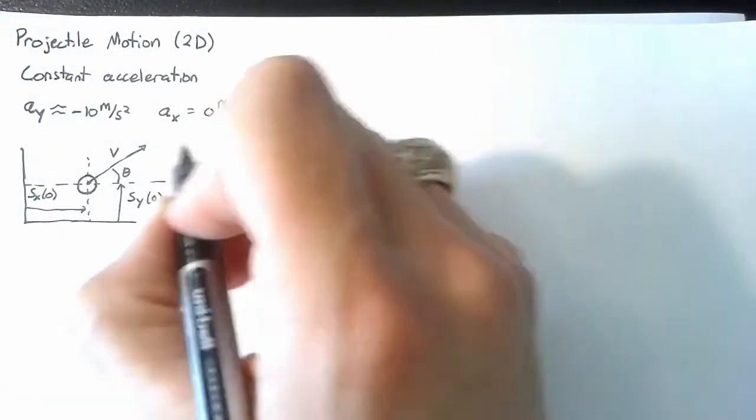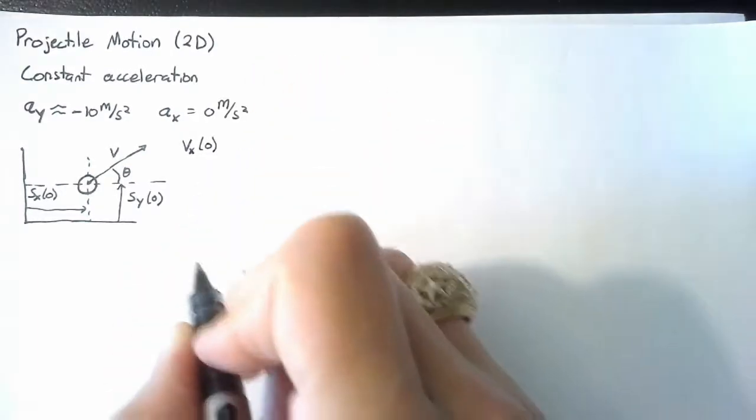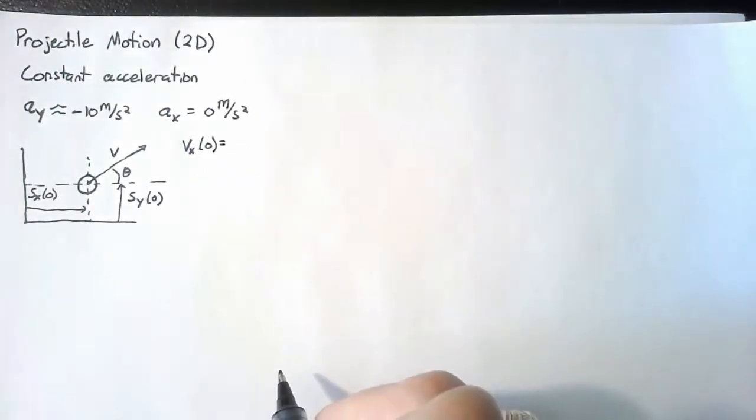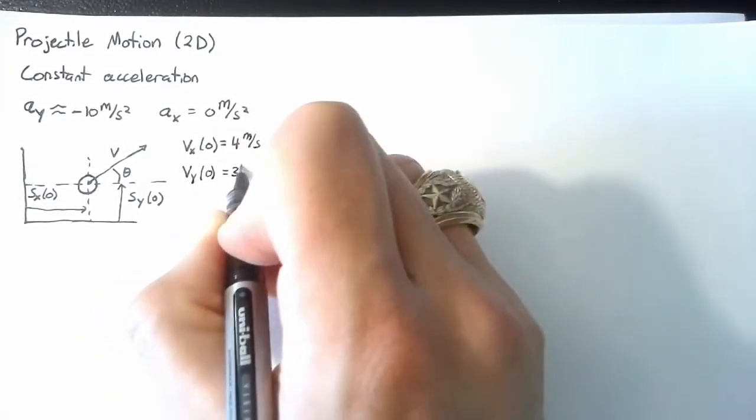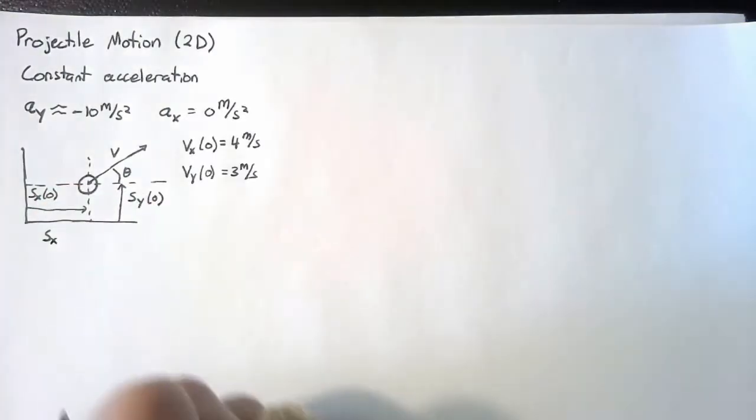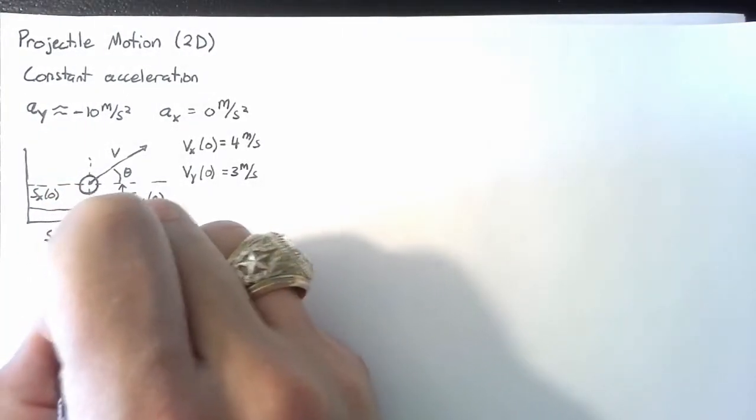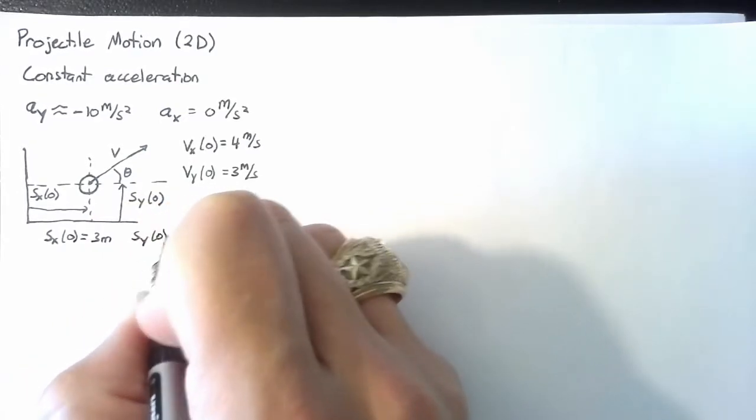So let's start plugging in some numbers for this. Let's say that our vx is going to be 4 meters per second. Our vy is 3 meters per second. And let's choose our sx to be 3 meters and our sy to be 2 meters.